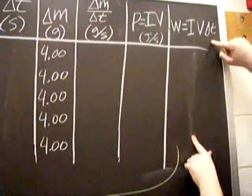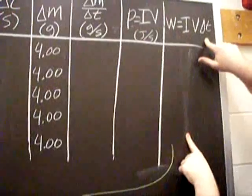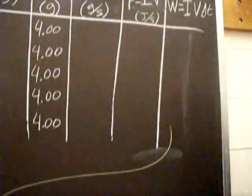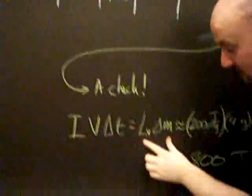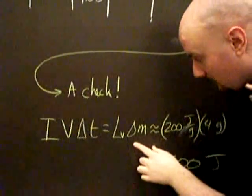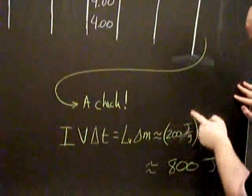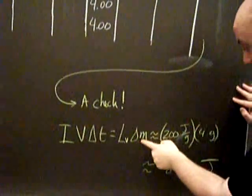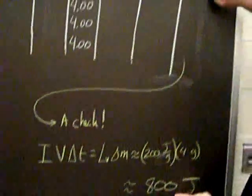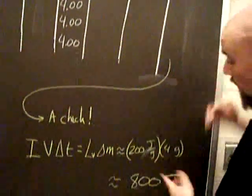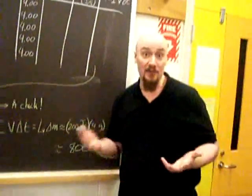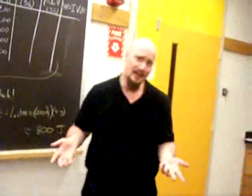And then this column right here, the work, that's our check. Because you see, the IV delta T, well, that should equal L_V delta M. Well, L_V is around 200 joules over grams, and then this is the same, four grams. So this column here, each run should be around 800 joules. That's your check. If you don't get around 800 joules, you know you're screwed up. Time to do that run again.